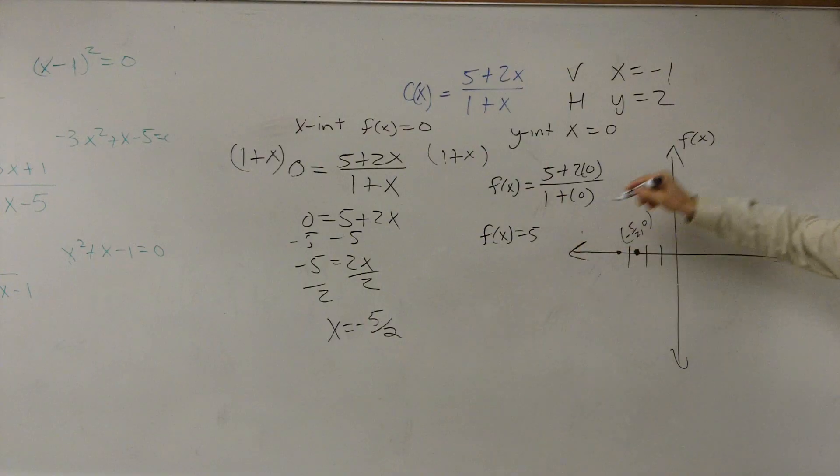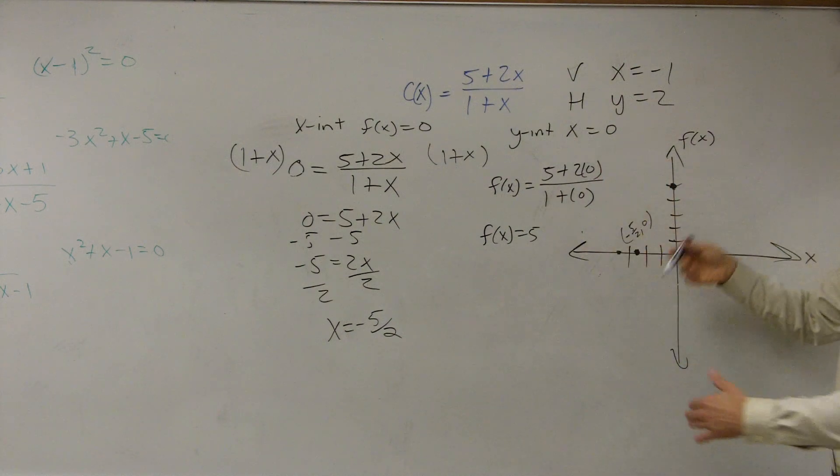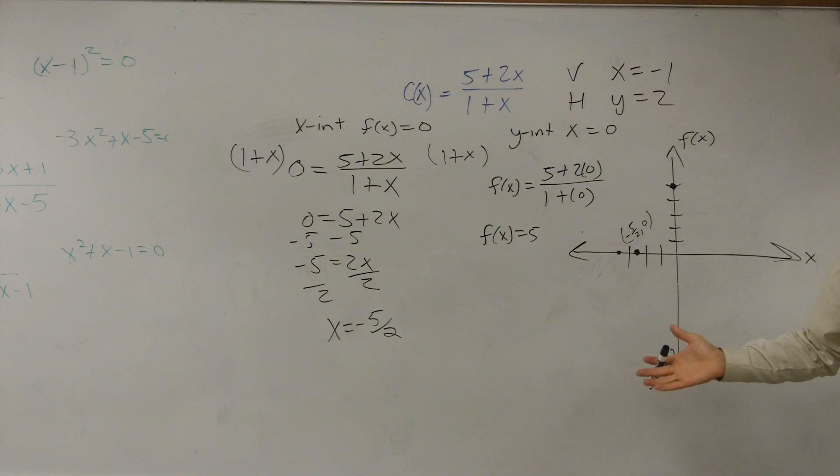So f of x equals five. So that means my y-intercept, or my f of x-intercept, is going to equal one, two, three, four, five. So my graph crosses there, and it crosses there. Now, it's not a line. You don't connect it. That's what we do in algebra two. They're finding the x-y-intercepts and connecting it, right?